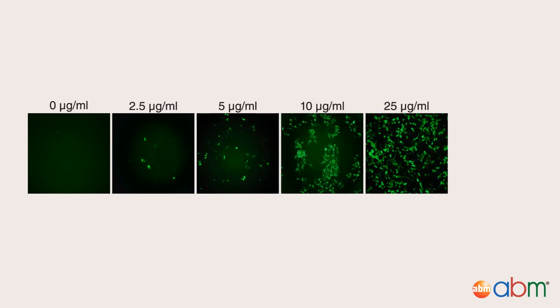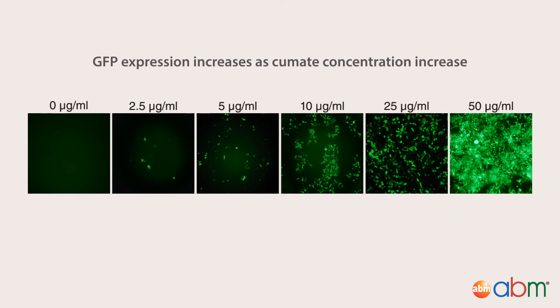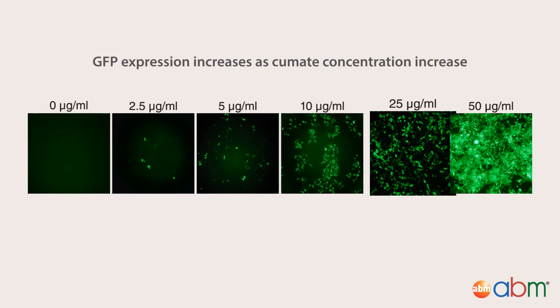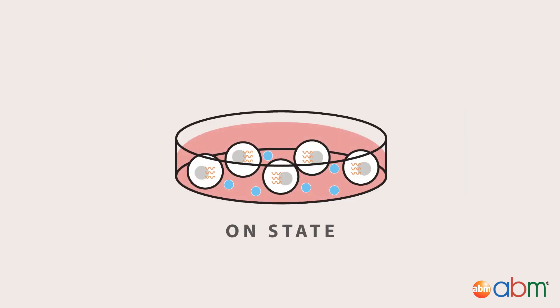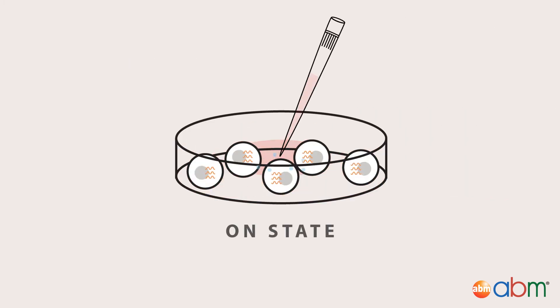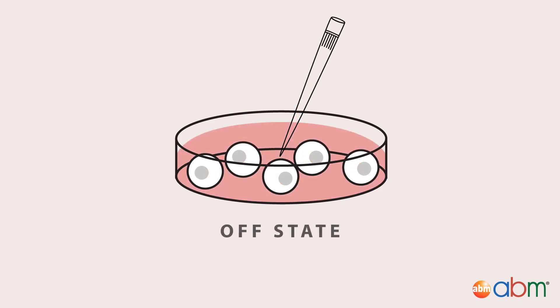The level of gene expression can be fine-tuned by adding greater or lesser amounts of cumate. For example, it's easy to see here that the level of GFP reporter expression increases when more cumate is added to the media. It's also easy to turn the system off again, simply by performing a quick and easy media change to remove the cumate. The system may be turned on and off at will, as many times as desired.